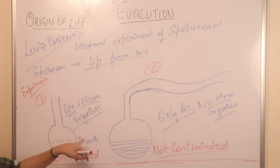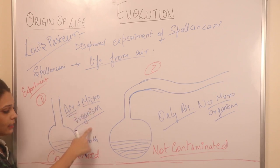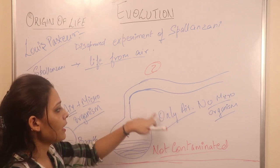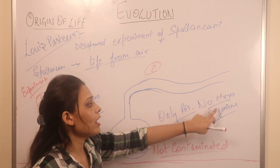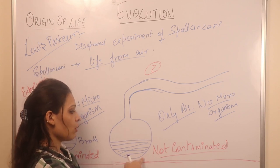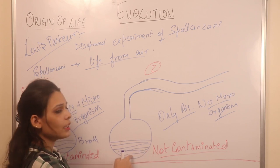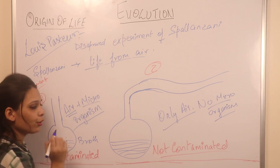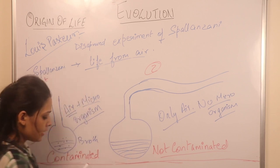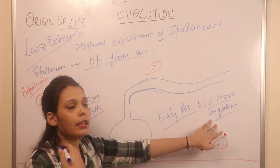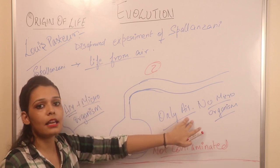In the straight-neck flask, both air and microorganisms can enter, so the broth is contaminated. In the curved-neck flask, only air can enter — no microorganisms can get in. He observed that there was no contamination and no growth in the curved-neck flask. This proved that life forms come from pre-existing microorganisms, not from air alone.